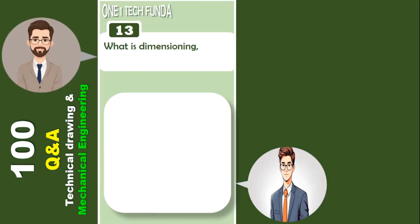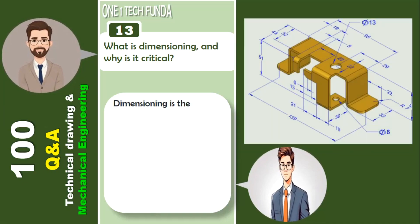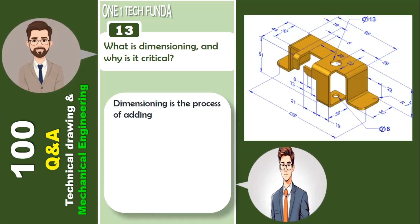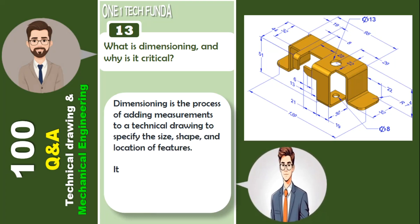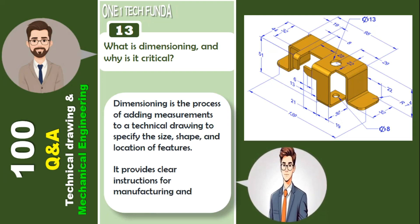What is dimensioning and why is it critical? Dimensioning is the process of adding measurements to a technical drawing to specify the size, shape, and location of features. It provides clear instructions for manufacturing and assembly.